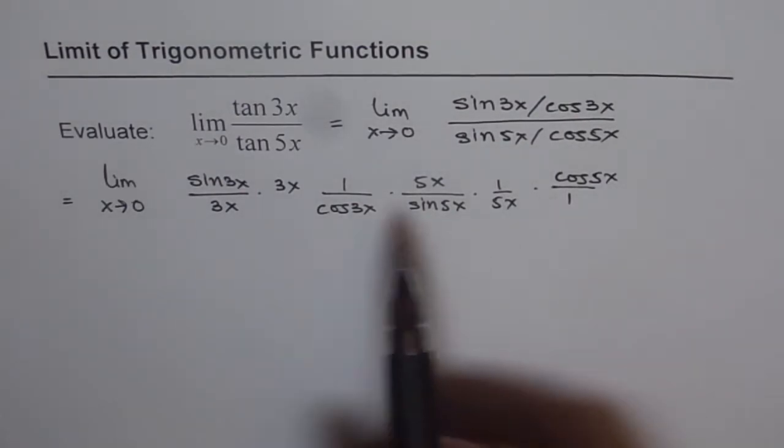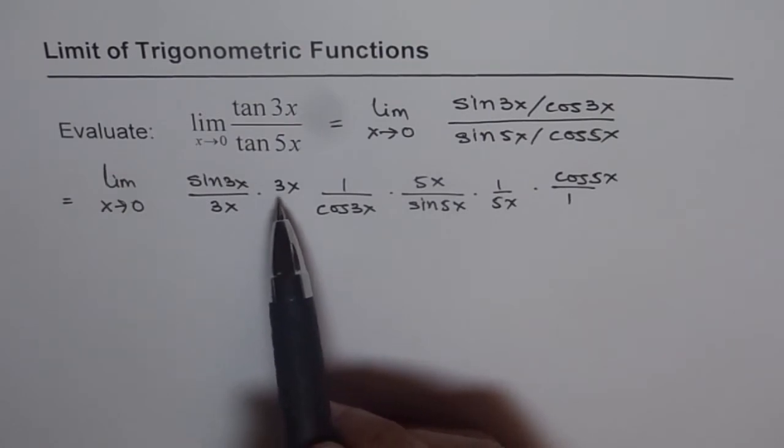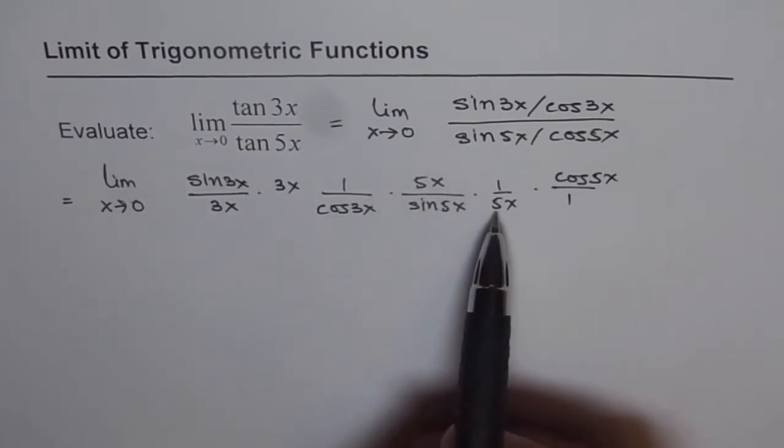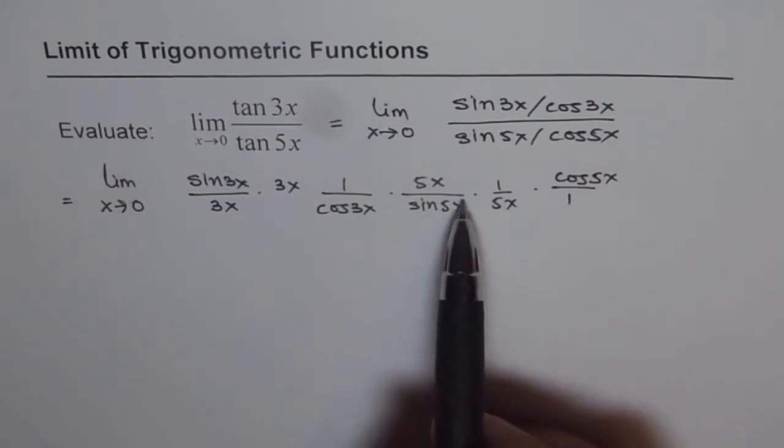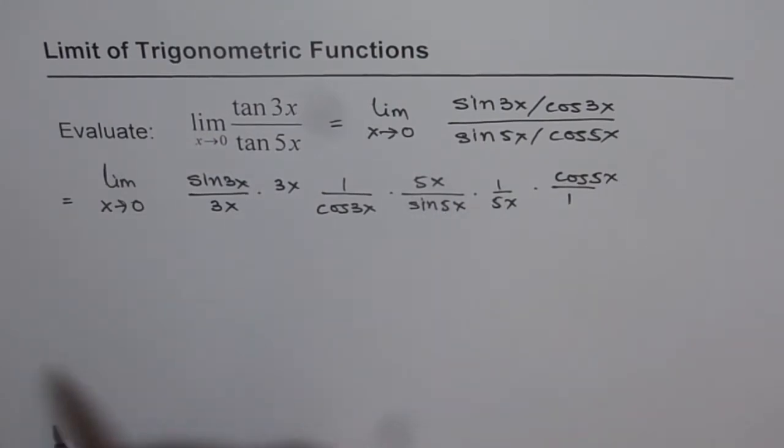Basically we have multiplied and divided by 3x and 5x. So 3x over 3x and 5x over 5x. And we have rearranged all the terms here.